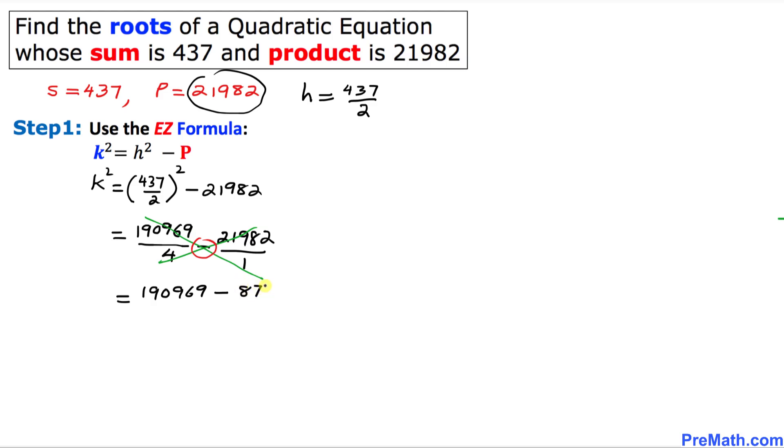Be careful with that 1. And at the denominator we multiply these two denominators, 4 times 1 is going to be 4. And now we are going to subtract the numerators. That is going to give us 103041 divided by 4. And on the left hand side is K square.